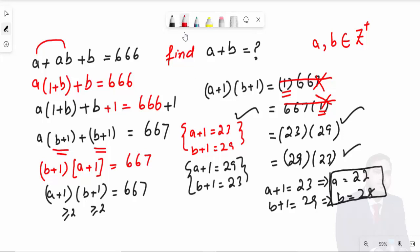From the second case, a + 1 = 29, so a = 28. And b + 1 = 23, so b = 22.